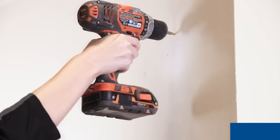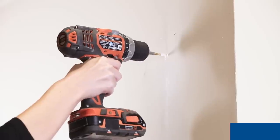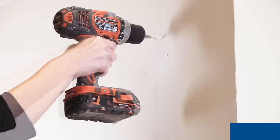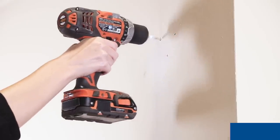If you are mounting to drywall, brick, or masonry, use a 3/16ths drill bit to drill 3 holes in the marks you made. If you are mounting to wood or a stud, use a smaller drill bit.